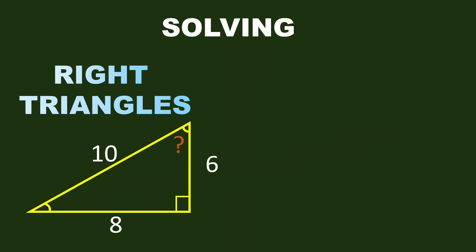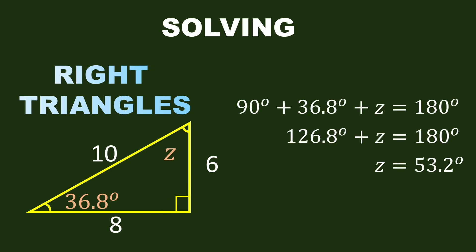Since this triangle is a right triangle, we can find the third angle using the angle sum theorem. The third angle is denoted by z. So using the angle sum theorem, we have 90 degrees plus 36.8 degrees plus z equals 180 degrees.